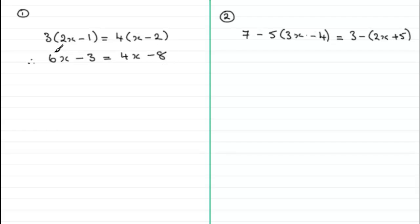And in previous videos, we've looked at questions like this. So all we need to do now is take 4x from both sides. And if we do that, 6x take 4x leaves us with 2x. And we've got the minus three here, that constant. And if we take 4x from this side, the 4x cancels, leaving us with just minus eight.